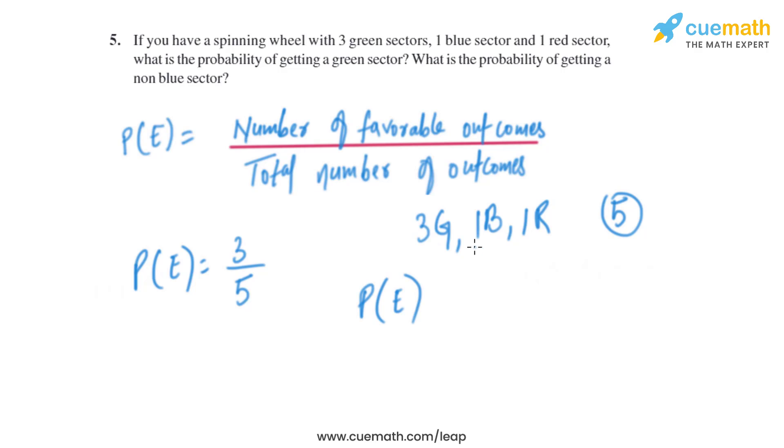As we can see, there are four sectors that are non-blue: three green and one red. So the number of favorable outcomes are four divided by the total number of outcomes which are five. So the probability of getting a non-blue sector is four by five.